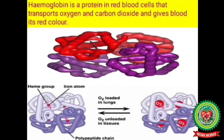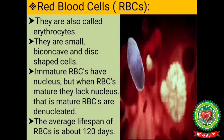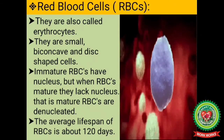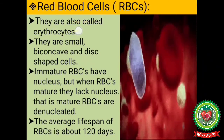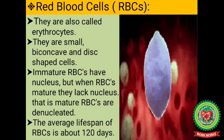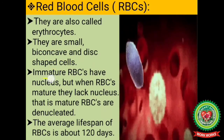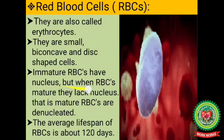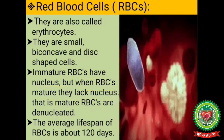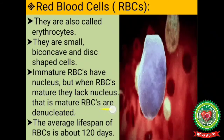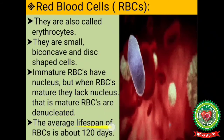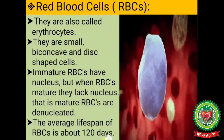Red blood cells are small, biconcave, and disc-shaped cells. Immature RBCs have a nucleus, but when RBCs mature they lack a nucleus — that is, mature RBCs are denucleated. The average lifespan of RBCs is about 120 days.